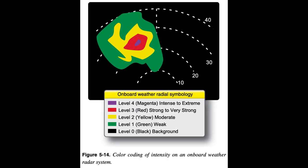A simple color-coding scheme, as shown in Figure 5-14, is used to represent the intensity of radar echoes detected by an onboard weather radar system.